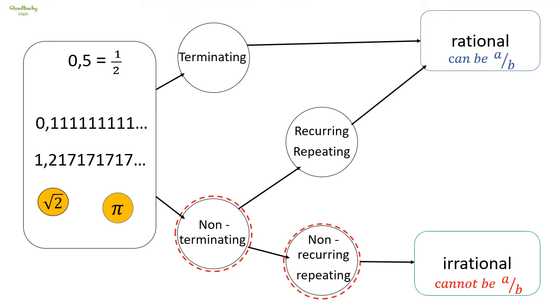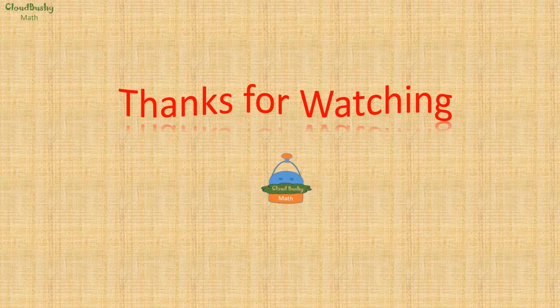In summary: a non-terminating and non-repeating number cannot be expressed as a simple fraction, and it is therefore an irrational number.